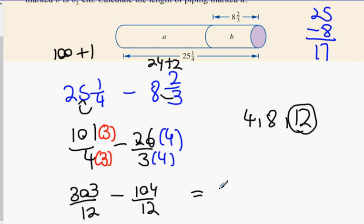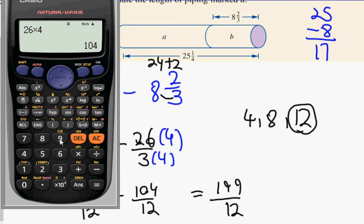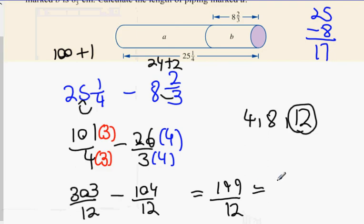Now what is 303 minus 104? 199. 199 over 12. We're expecting our answer to be in the 17 region, aren't we? So let's look at 199 divided by 12 in the calculator. And what we get here is, we press the shift button, follow it up. 16 and 7/12. 16 and 7/12 is located very close to the 17. Hence, we know our answer more or less should be right. Is that okay?